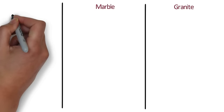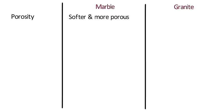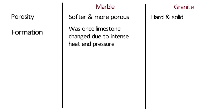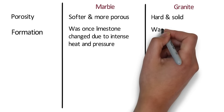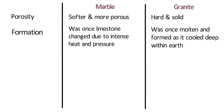Marble is softer and more porous than granite. In terms of formation, marble was once limestone that changed due to intense heat and pressure. This process altered its crystalline structure and introduced other minerals, which produce its characteristic veining. Granite, on the other hand, is an igneous rock — it was once molten and formed as it cooled deep within the earth. The minerals in granite usually appear as small flakes throughout the stone.